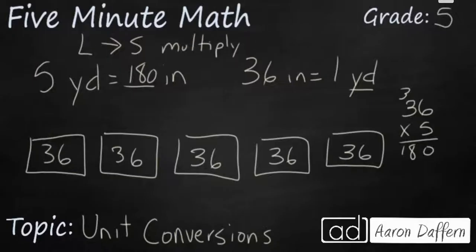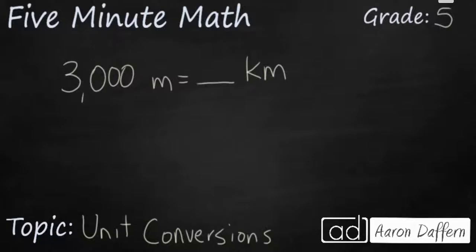Let's look at a different example. Let's say you want to convert 3,000 meters into kilometers. Once again you need to know two things. How many of the smaller unit fit into the large unit. In this case we need to know that 1,000 meters makes up one kilometer